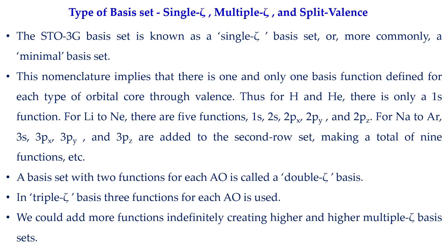When we defined the STO-3G basis set, we said it is a minimal basis set, which is also called single zeta. This nomenclature comes from the idea that only one basis function will be used to express one orbital. For a single zeta basis set, only one basis function per orbital is used. For example, for hydrogen and helium, which have only one s orbital, only one basis function is involved in the STO-3G basis set.